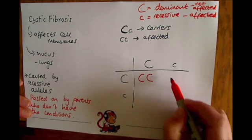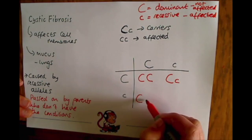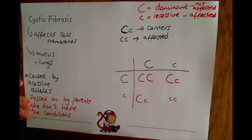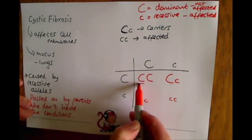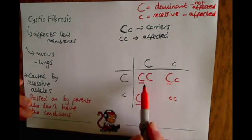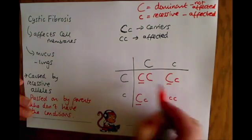You'd have two capitals, a capital and a lowercase, a capital and a lowercase, and two lowercase. So in this case, because dominant means you're not affected, there's a 75% chance that the offspring will not be affected.